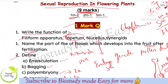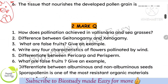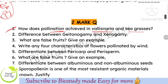Now 2-mark questions. From this chapter, one question will come in the 2-mark section. Important topic: what type of pollination occurs in seagrasses? In seagrasses, only water pollination (hydrophily) occurs — this is very very important. Water is the pollinating agent for seagrasses, and pollination happens through water (hypohydrophily).